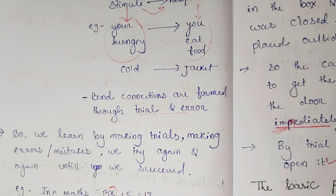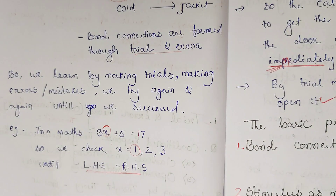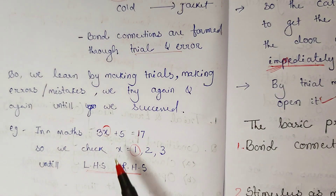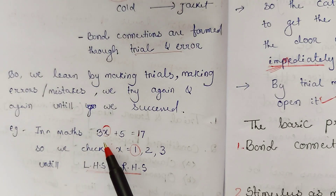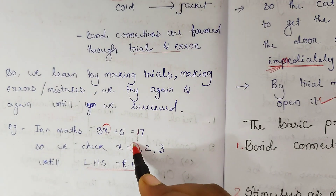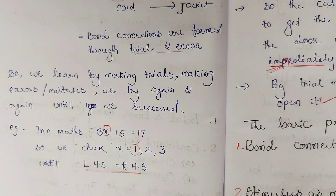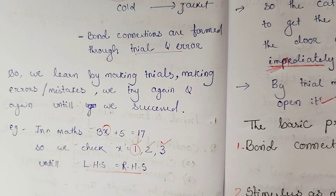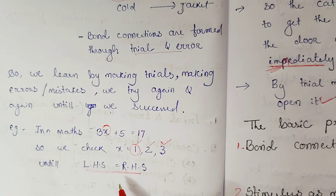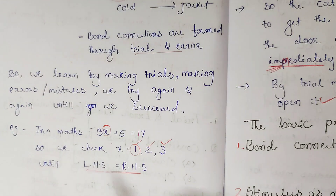For example, in math: the equation 3x + 5 = 17. You don't know x, so you try x = 1 — wrong. You try x = 2 — wrong. You try x = 3. You keep trying until LHS equals RHS. This is the trial and error theory. Now we'll see Thorndike's experiment.